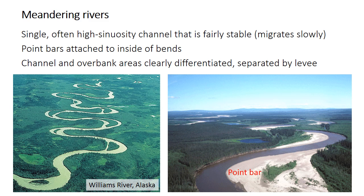Because the channel is fairly stable, the overbank region is clearly separated, and there's often a raised bank called a levee at the edge of the channel. The overbank has quite different sedimentary features from the channel itself. This sharp differentiation between the channel and overbank sediments is a major distinction between meandering and braided rivers. Meandering rivers are also characterized by point bars, which are sandy areas attached to the inside of the meander bends, and those can be contrasted with the abundant mid-channel bars in braided systems.